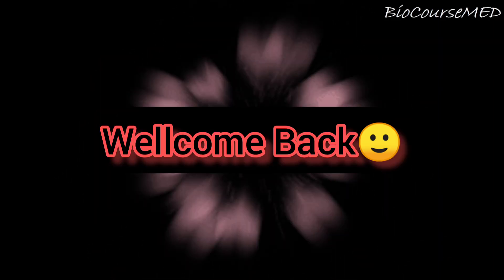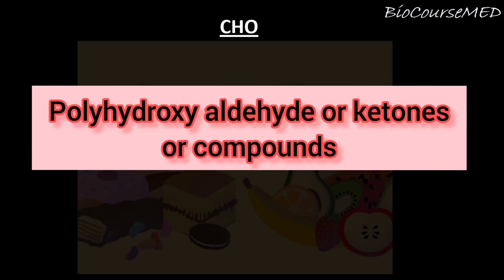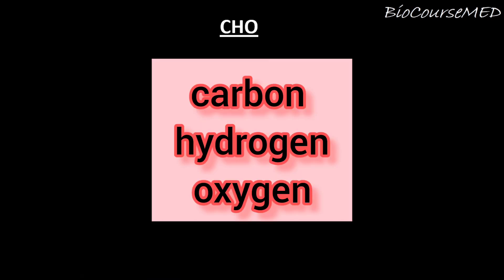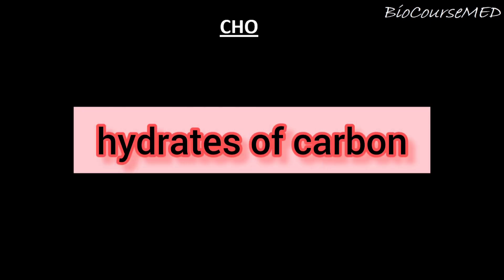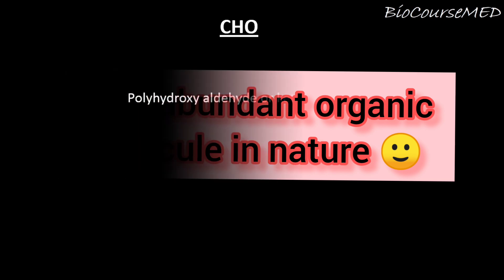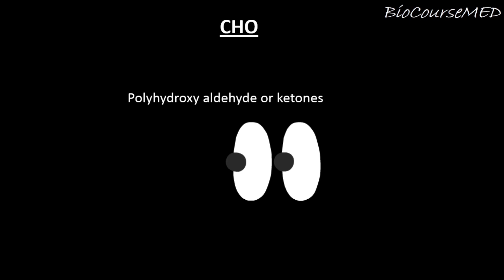Welcome back. In this video, we are going to talk about carbohydrates in a little bit of detail. We will discuss the functions and classification of carbohydrates. The major scientific definition states that carbohydrates may be defined as polyhydroxy aldehydes or ketones, or compounds which produce them on hydrolysis. They are primarily composed of carbon, hydrogen, and oxygen, and the name carbohydrate literally means hydrates of carbon. They are the most abundant organic molecules in nature.